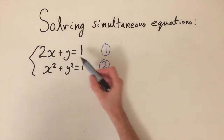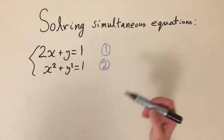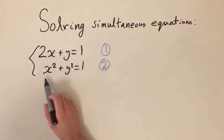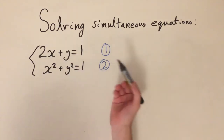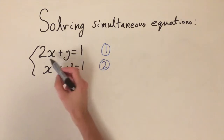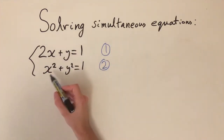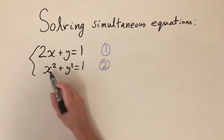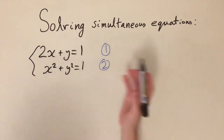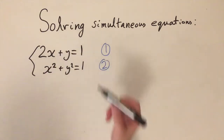Today we're going to be looking at solving simultaneous equations, but this time one of the equations is nonlinear. By nonlinear I just mean it isn't involving just a number times x and a number times y — we have, for example, x squared, y squared, or we could have square roots: anything that isn't just a simple linear equation.